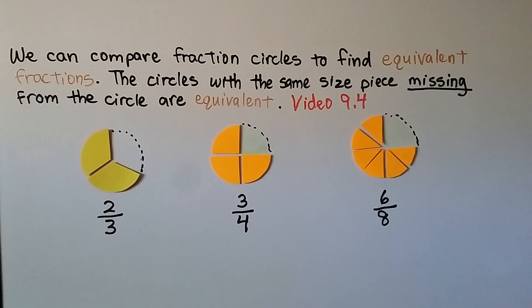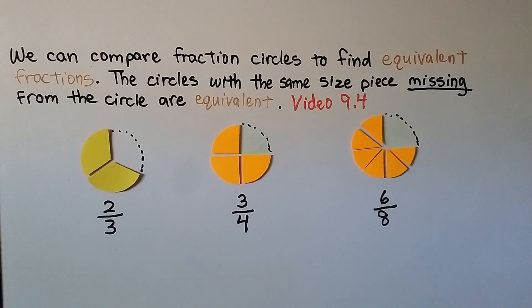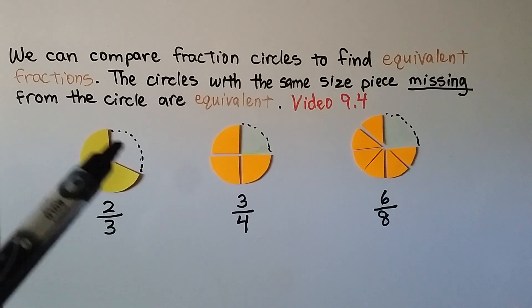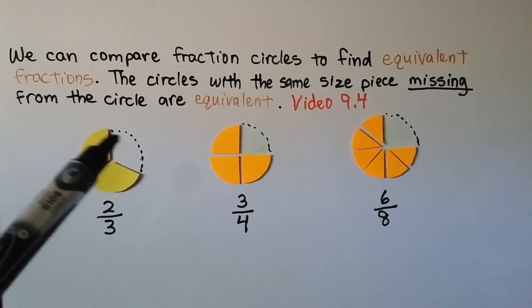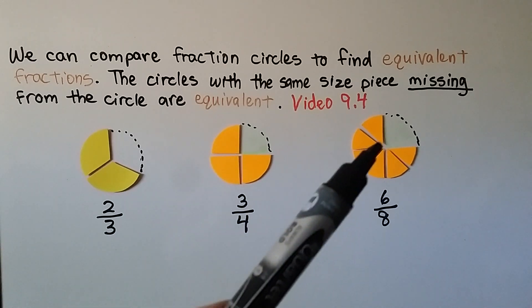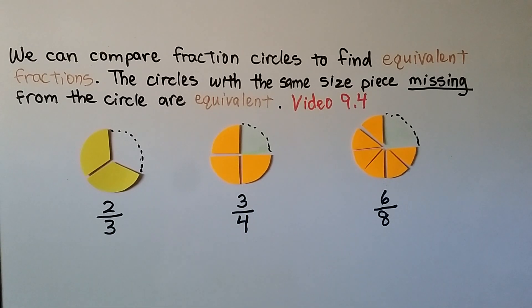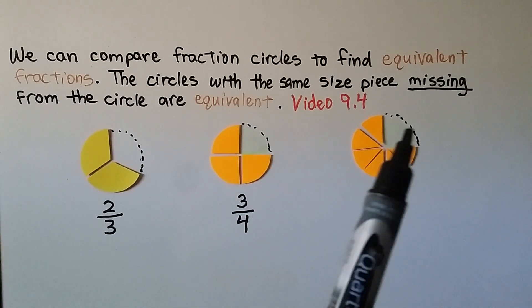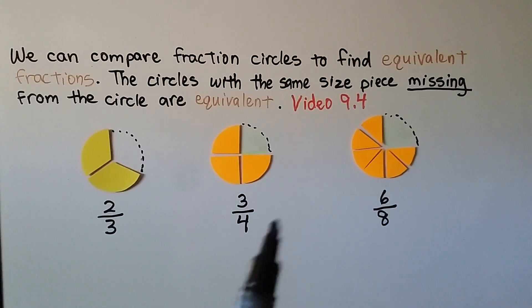We can compare fraction circles to find equivalent fractions. The circles with the same size piece missing from the circle are equivalent. We learned about using missing pieces in video 9.4. We can see the piece that's missing from two-thirds, and from three-fourths and six-eighths — these are missing the same size pieces, so these are equivalent fractions.